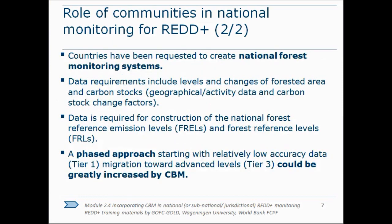UNFCCC requires countries to develop national forest monitoring systems at different levels of accuracy. Tier one data is based on continental-wide averages — not very accurate for any particular location. Tier three data is much more specific, often at the sub-national level. What community-based monitoring offers is a way of developing even greater accuracy — something you could call tier three plus — very local and much more accurate for local conditions.